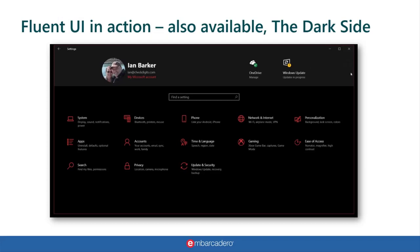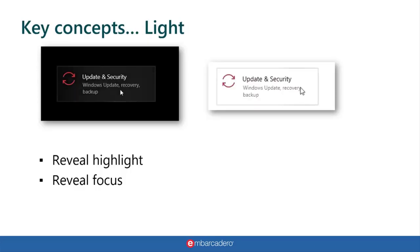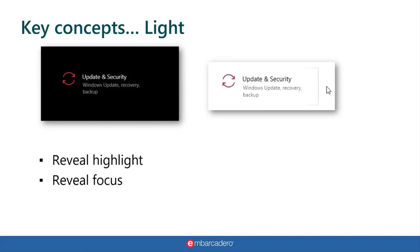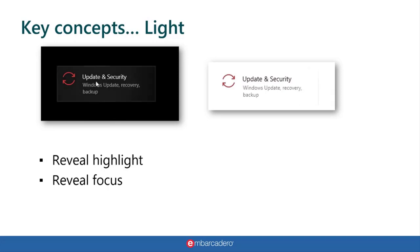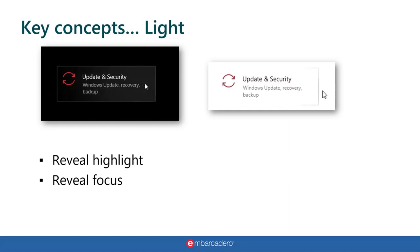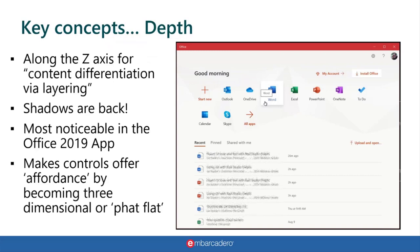When you highlight over buttons, you can see a nice graduated fill. The border comes on and off — when you click away from the app, the border disappears. This is in the Fluent UI spec: it should indicate whether the window is active or not. One key concept is light — a thing called reveal highlight, where something happens to a clickable item when you hover over it. There's also reveal focus: if you tab to or click a control, it reveals that it has focus.